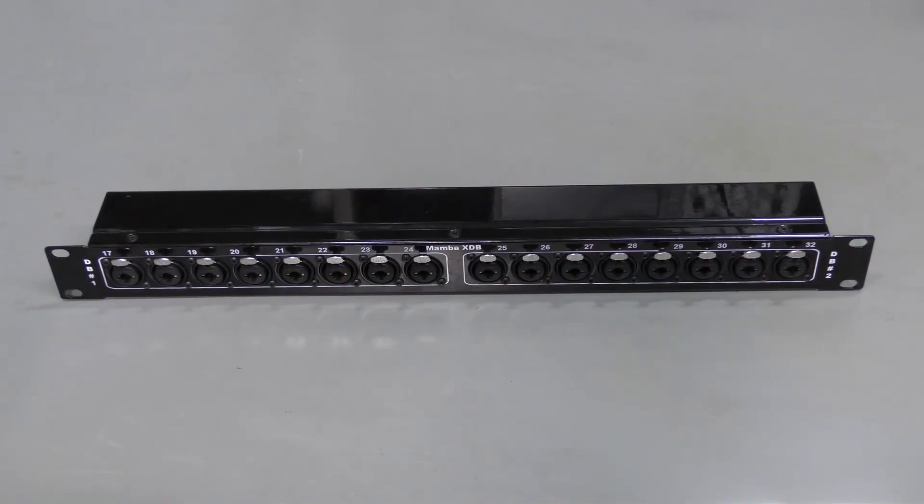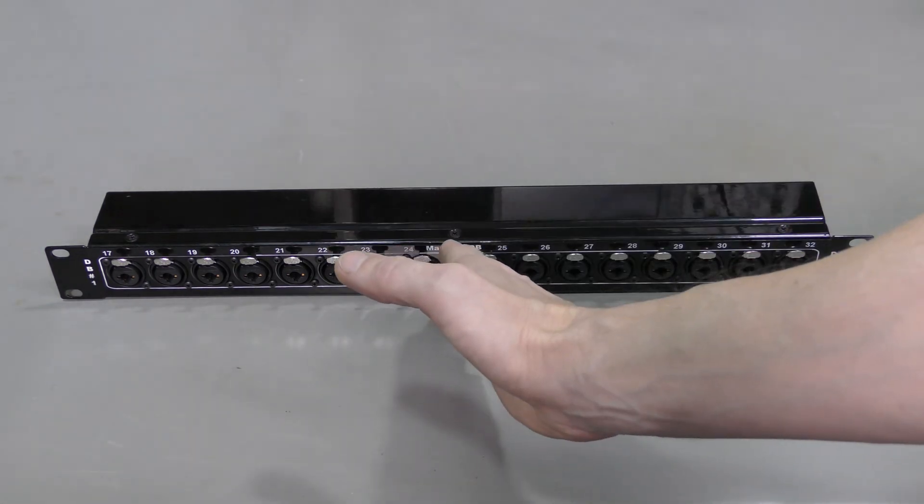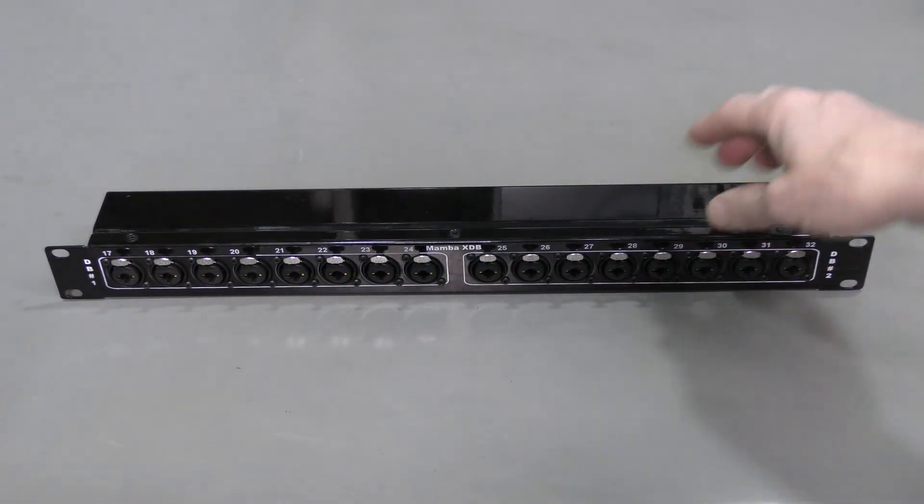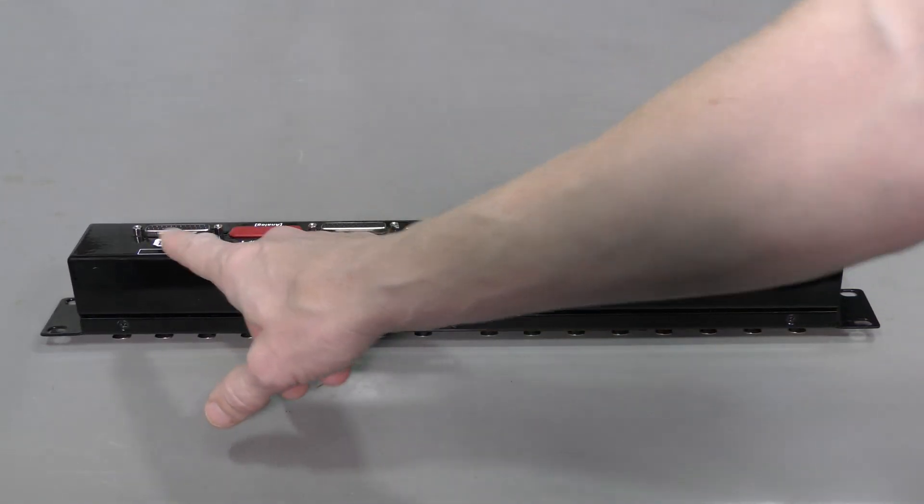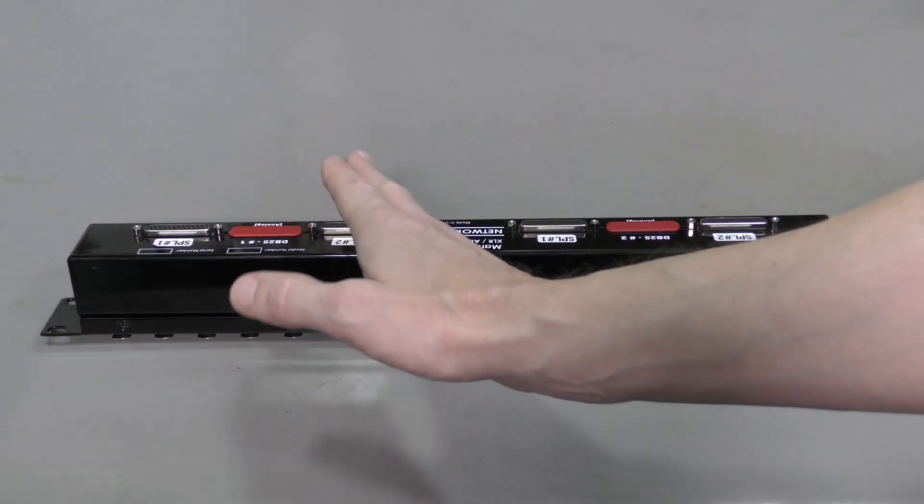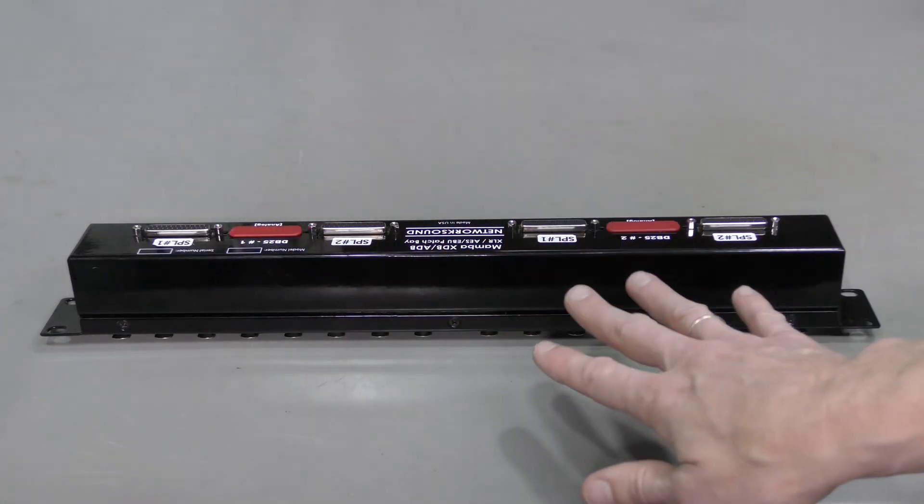So, this patch panel has 16 inputs, combo connectors, XLR and TRS, divided into 2 sections, 8 inputs each. And on the back we have 4 DB25 connectors, split 1 and 2 for the first half and the same for the second half.